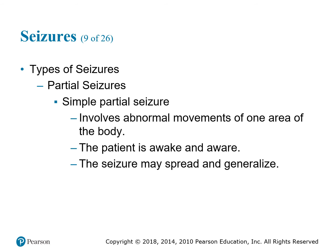Partial seizures — simple partial seizures involve abnormal movements of one area of the body. The patient is awake and aware because it's only affecting one cerebral hemisphere. They may have a jerking motion in an arm or a leg. Understand that a seizure can start as a simple partial seizure with just one arm convulsing and then spread into a generalized seizure where the patient loses consciousness and goes into a grand mal type seizure.